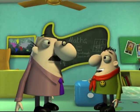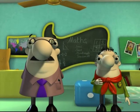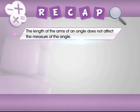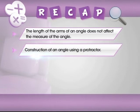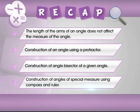This is so informative! It sure is! Now it's time for recap. In this module, we have learned that the length of the arms of an angle does not affect the measure of the angle. We have also learned how to construct an angle using a protractor, construct the angle bisector of a given angle, and construct angles of special measure using compass and ruler.